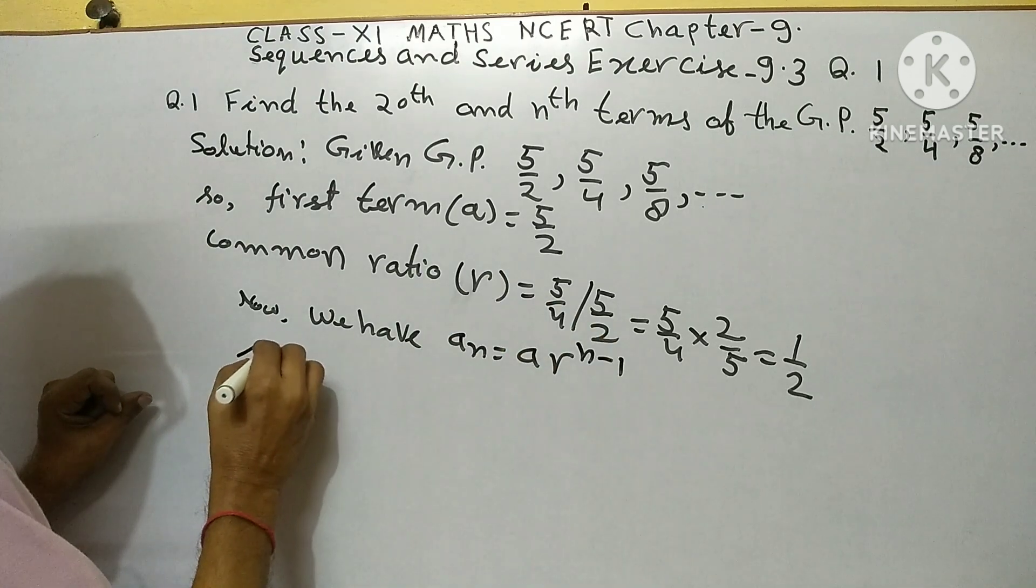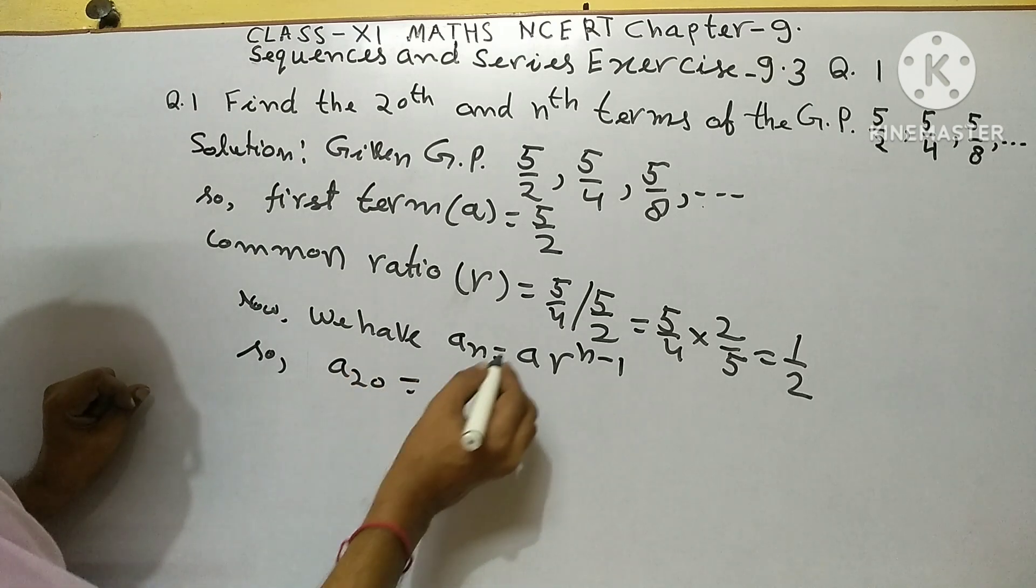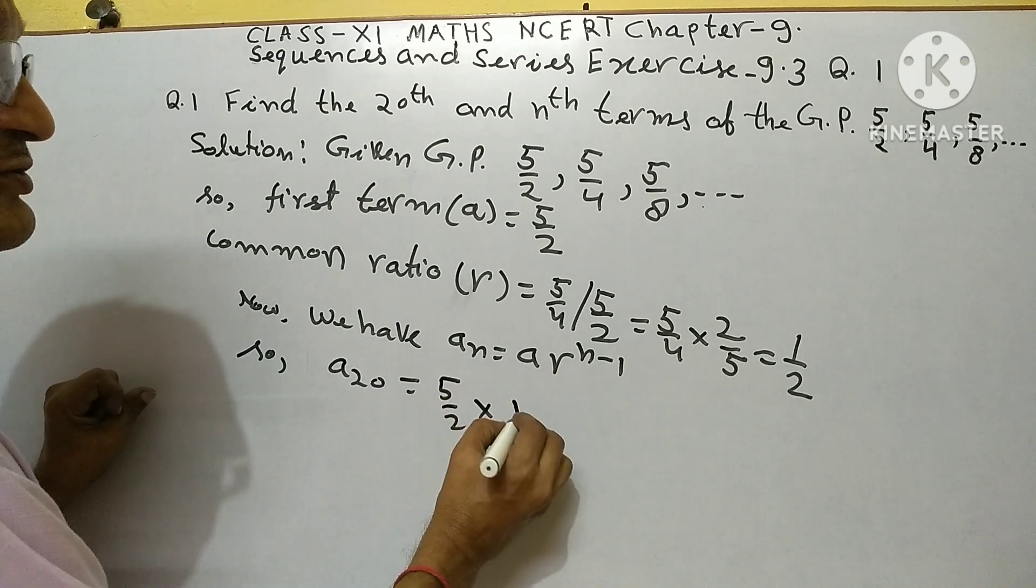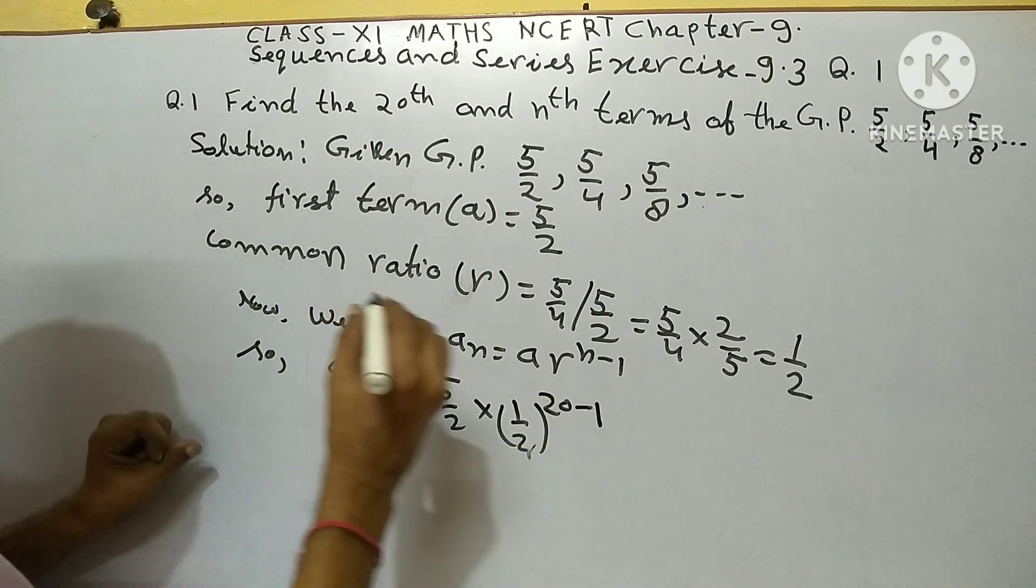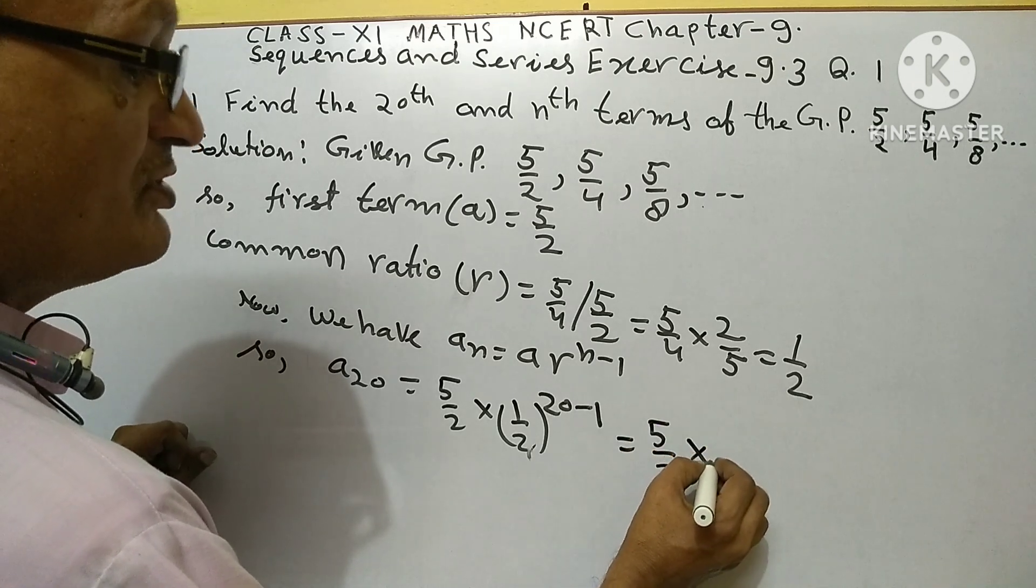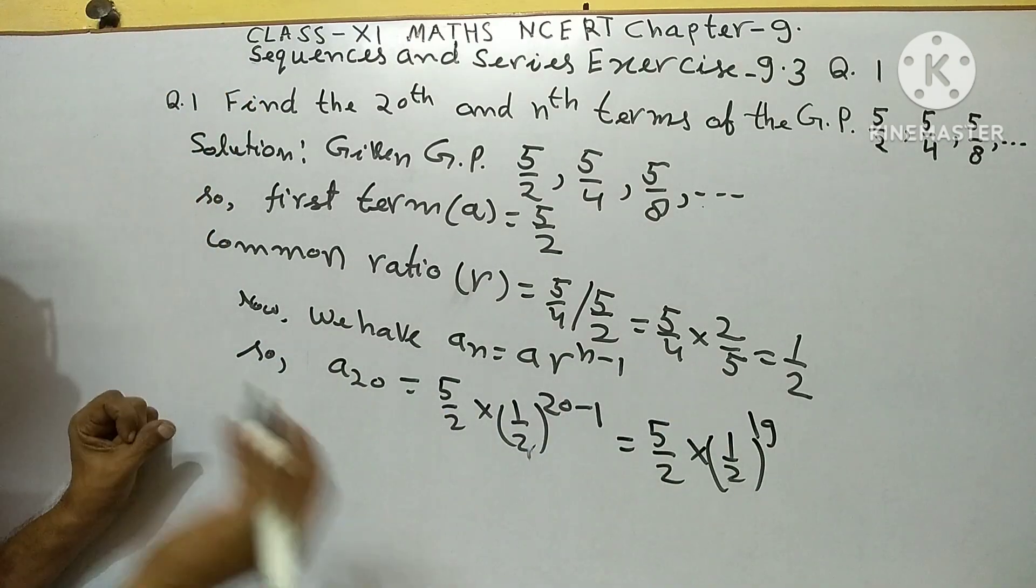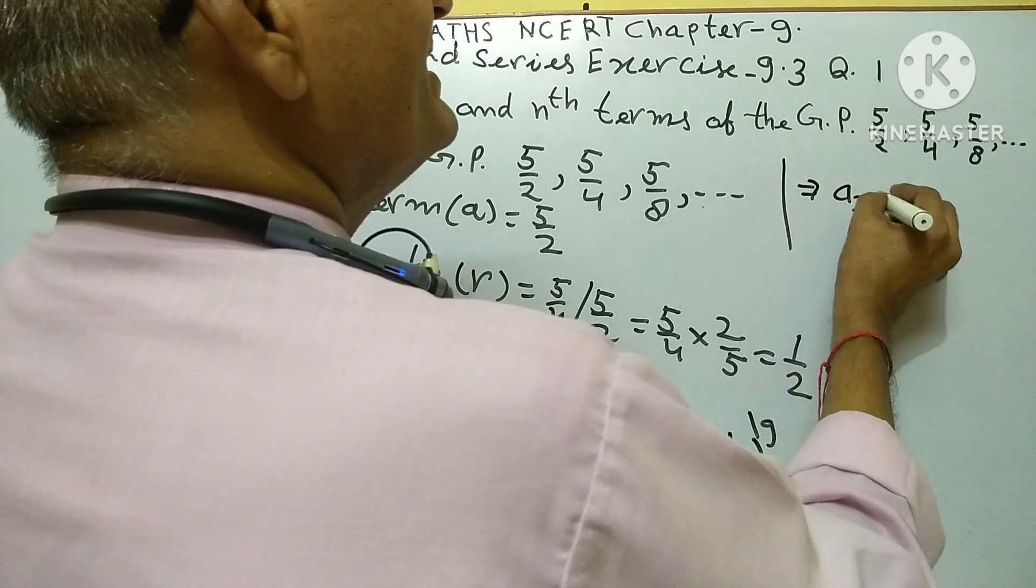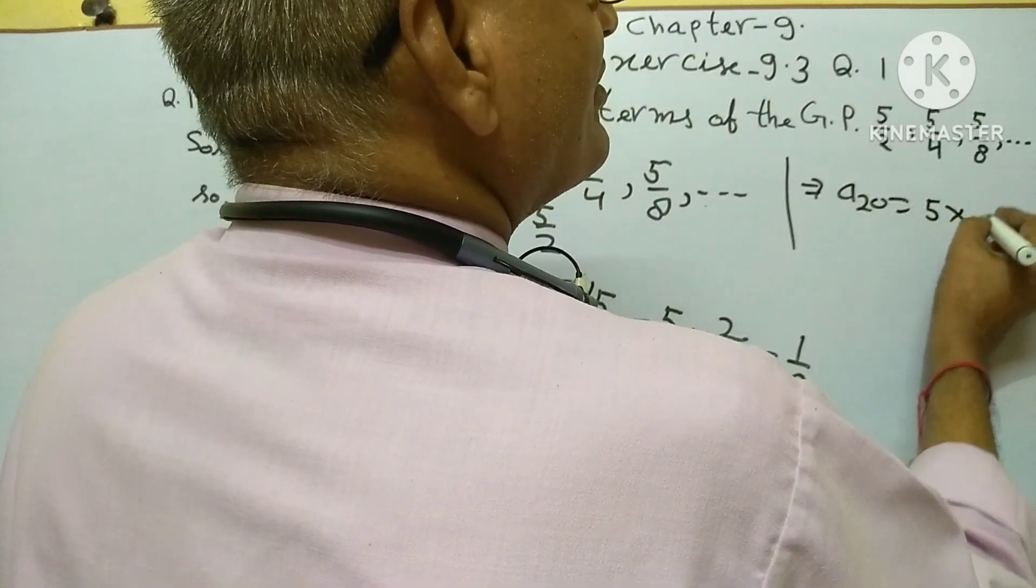So a_20 equals a means 5 upon 2, into r means 1 upon 2, to the power 20 minus 1, equals 5 upon 2 into 1 upon 2 to the power 19. 5 upon 2 into 2 into 1 upon 2 into 1 upon 2 into 2.